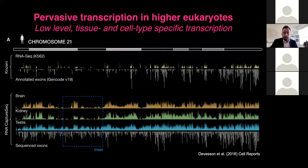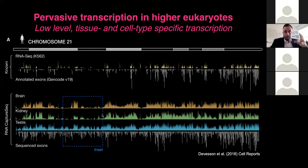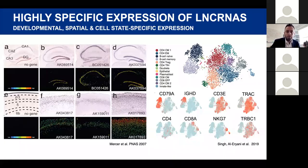Looking at present reference databases, the amount of protein-coding genes discovered as we sequence more samples stays around 20,000. Yet the amount of new long non-coding RNAs increases almost steadily — with each new database or GENCODE release, we have hundreds of new long non-coding RNAs. A recent study from colleagues in Sydney showed that a lot of this transcription in the human genome occurs at really low levels, almost ubiquitously across a whole chromosome.